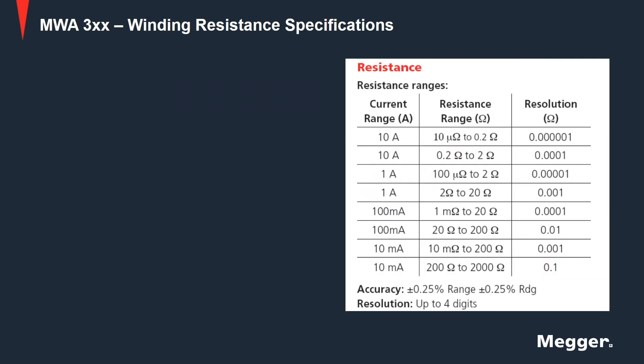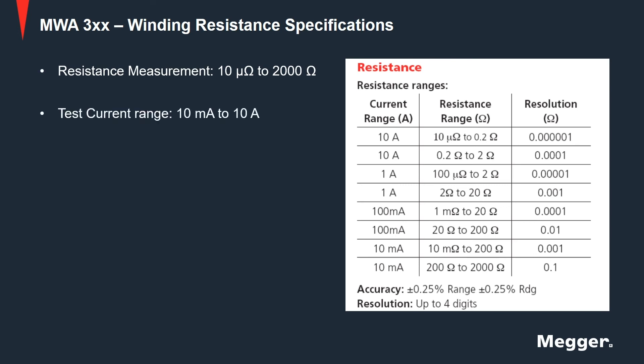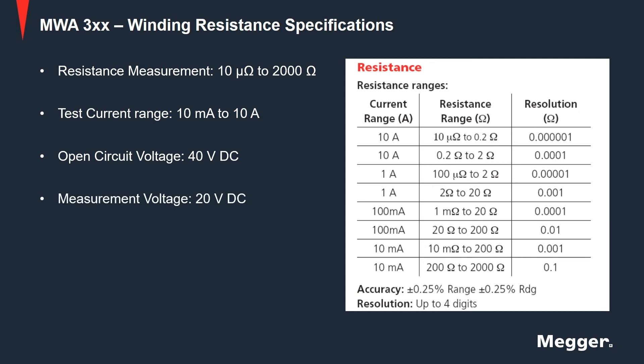Looking at the winding resistance specifications, the MWA has a resistance measurement range of 10 micro ohms to 2000 ohms, a test current range from 10 milliamps to 10 amps, an open circuit voltage of 40 volts DC, and a measurement voltage of 20 volts DC.